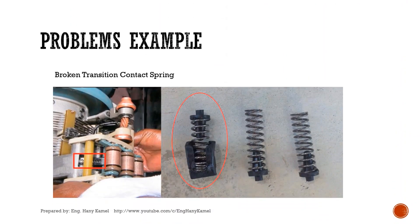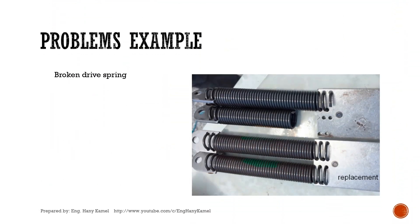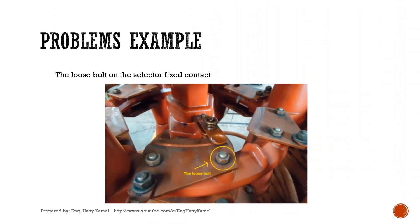Here are some examples showing how effective the test is. In the first example, the test curves showed a deviation; the tap changer was opened and a broken transition contact spring was found. In another example, a curve deviation was found; the tap changer was opened and a broken drive spring was detected. In a third example, there was a curve deviation; the tap changer was opened and a loose bolt on the selector fixed contact was found.